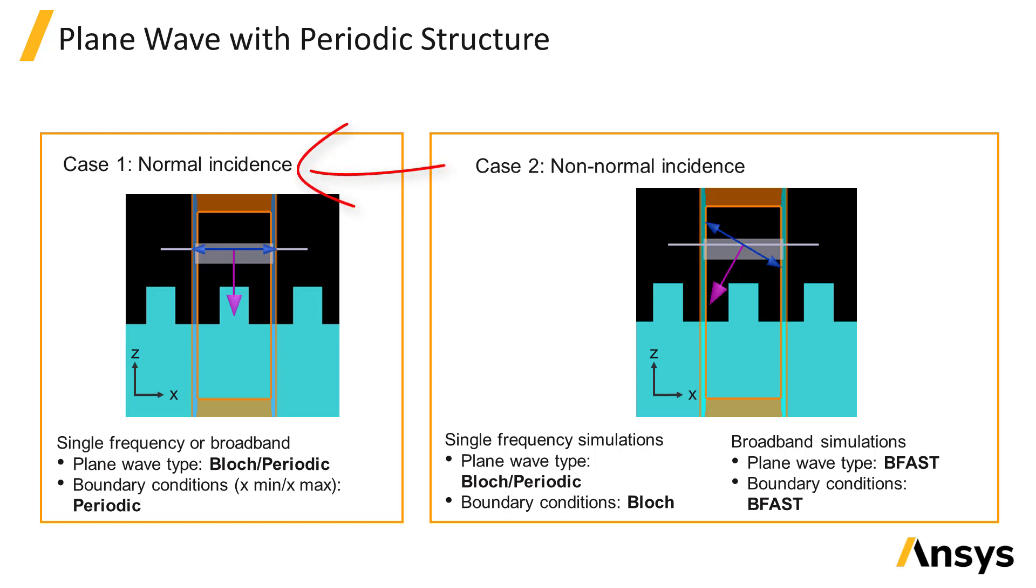In case 1, light is injected at normal incidence. In this case, the Bloch periodic plane wave type is used in conjunction with periodic boundaries at the sides of the simulation region.